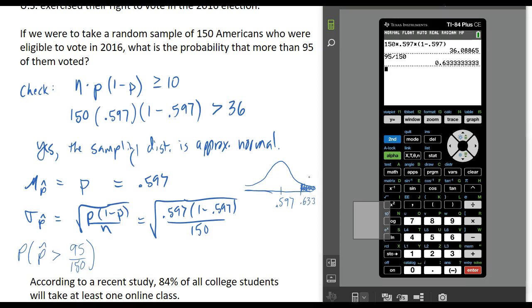I'm going to go into the distributions menu. I'm going to press second and press the variables button, and I want to go down to the second option, normal CDF, because we've identified that this is approximately normal. If you're looking at the picture, my lower value is 0.633, and my upper value is going to be infinity. We can get that by doing 1 and then E99, so we just put in a really big number to represent infinity.